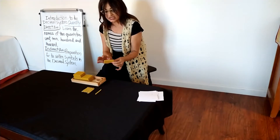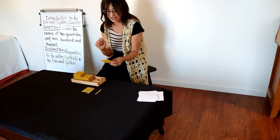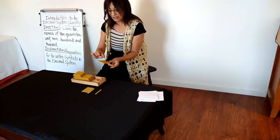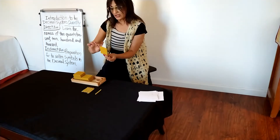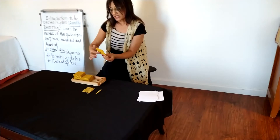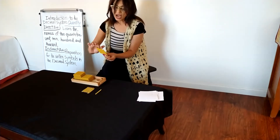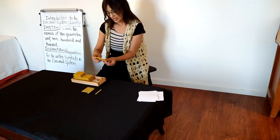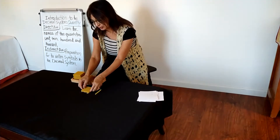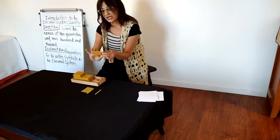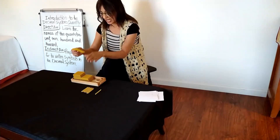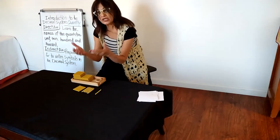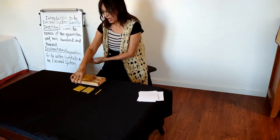The 100 square has 10 ten-bars in it: 10, 20, 30, 40, 50, 60, 70, 80, 90, and 100. So you can see the relationship here — 10 ten-bars in the 100 square, and 10 ten-bars make 100.